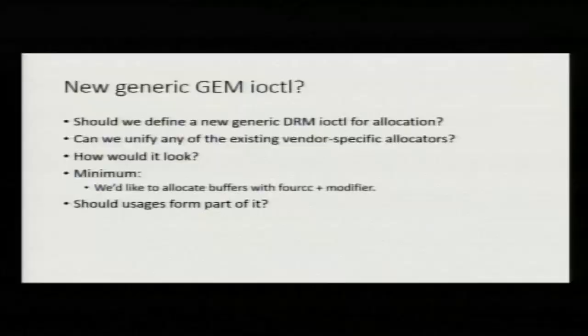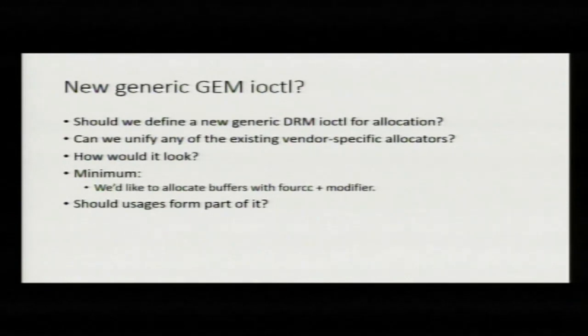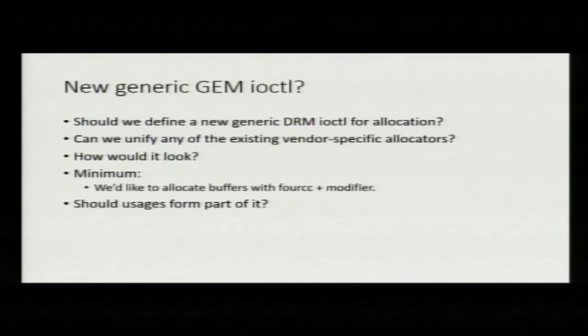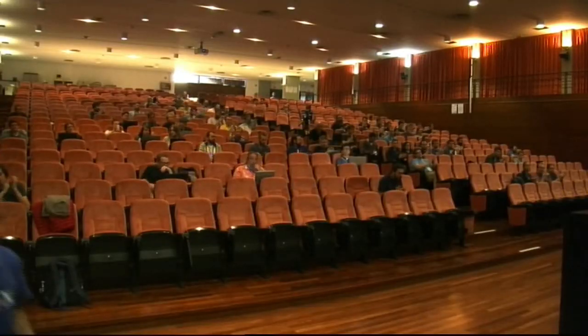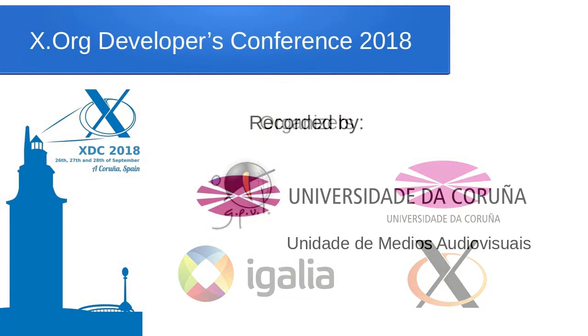So something to maybe discuss while we're here: is the right thing to add a new IOCTL in DRM that's generic? Can we unify some of the existing vendor-specific stuff? What would it look like to suit everyone? From our perspective, we at least want 4CC plus modifier and get a buffer back from that. You could go further and add usages like Gralloc or GBM. Just something that maybe people are interested in talking about, and we can find some time this week. That's it. Thank you.